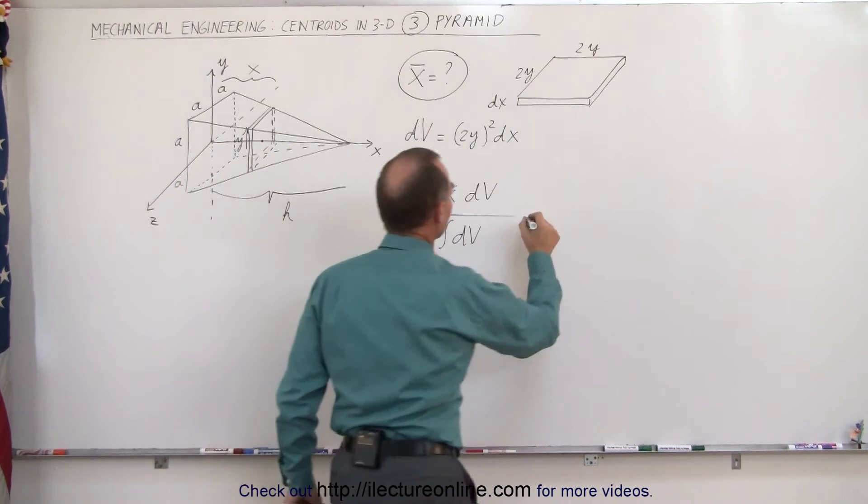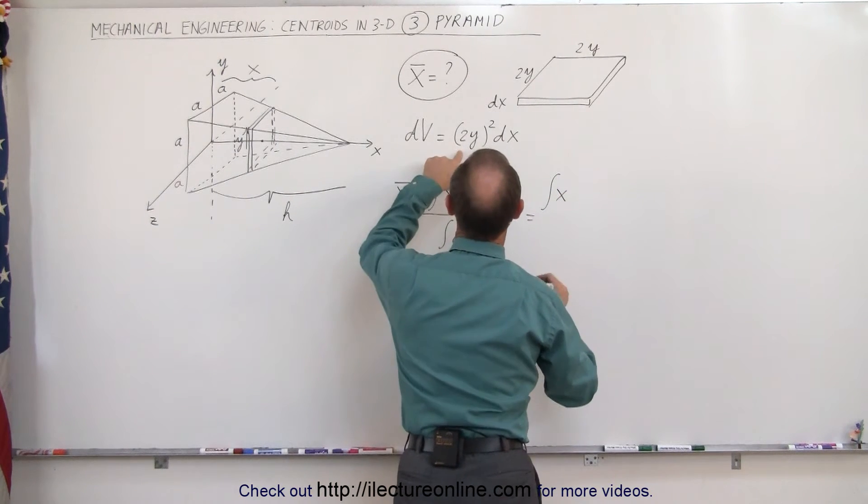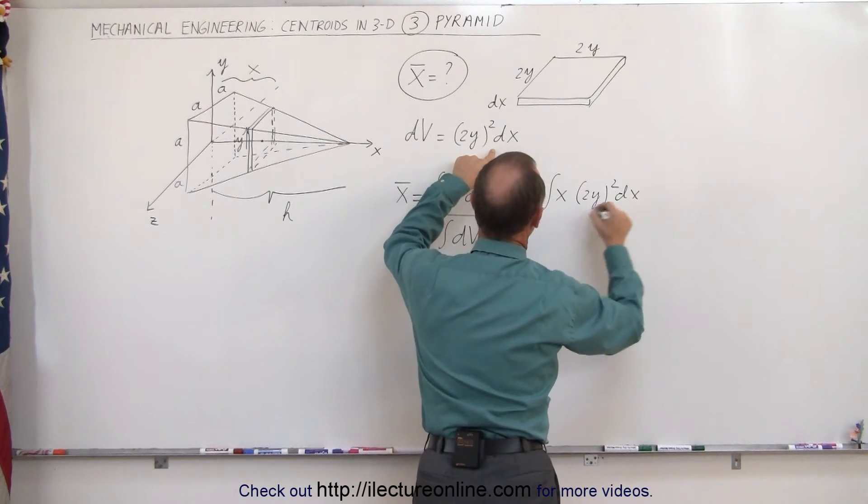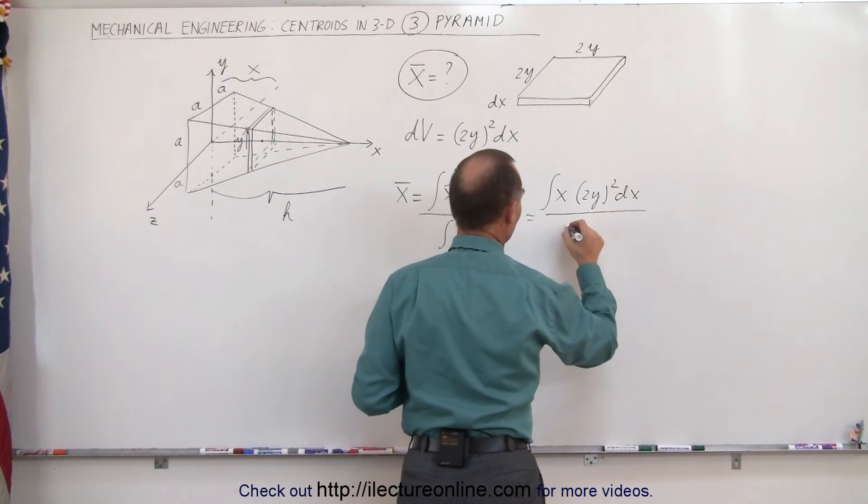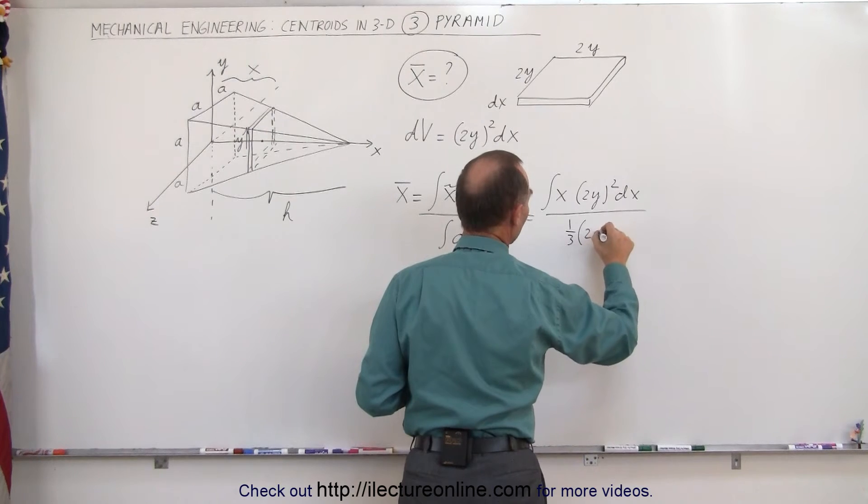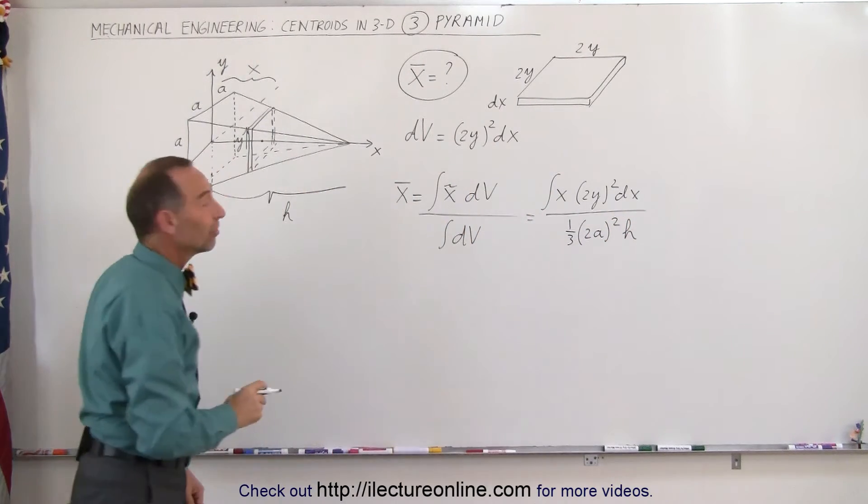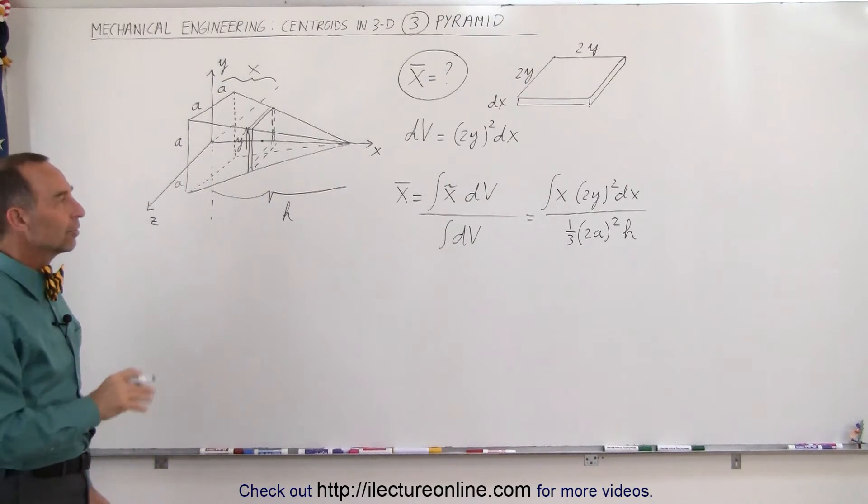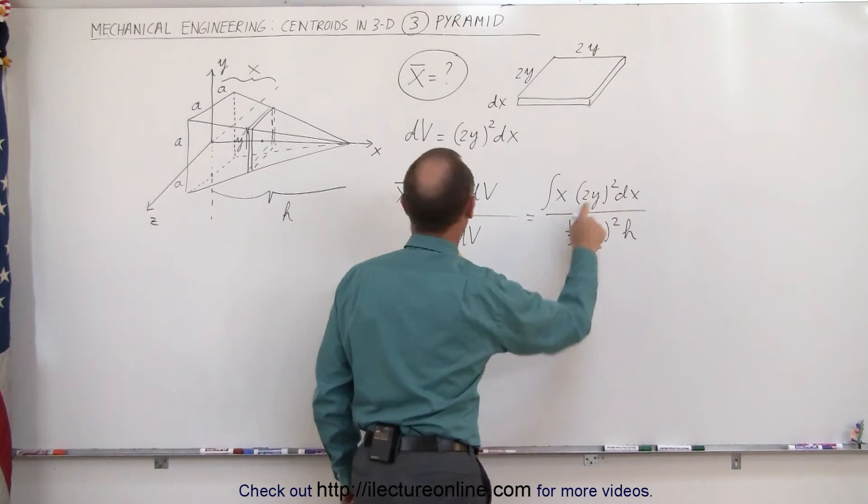In the numerator, we get the integral of x times dV, and dV is the quantity of 2y squared times dx. Divide the whole thing by the volume of the pyramid, which is one-third the base, 2 times a squared times the height h. Notice that I made the base 2a by 2a instead of a by a. There's a reason why I did that, and you'll see just in a moment. What we need to do now is somehow write y in terms of x.